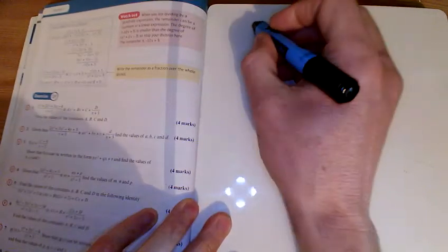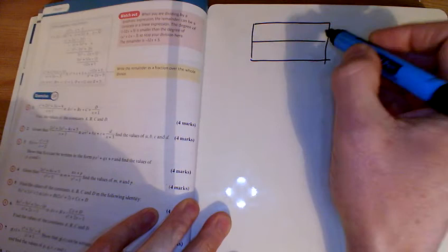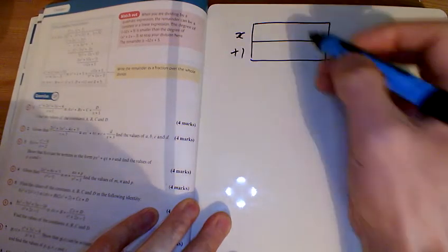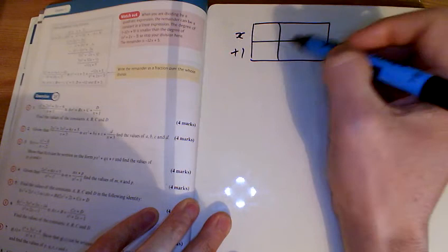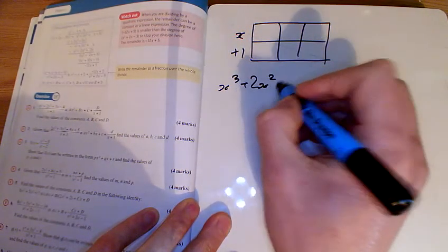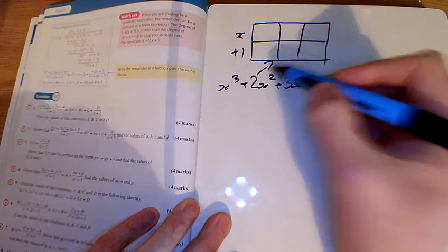For question 1, I'm going to do long division using a grid. We're dividing by x + 1, so I'll put x + 1 down the side. What we're trying to get is x³ + 2x² + 3x - 4, and this is what's going to arrive in the box.